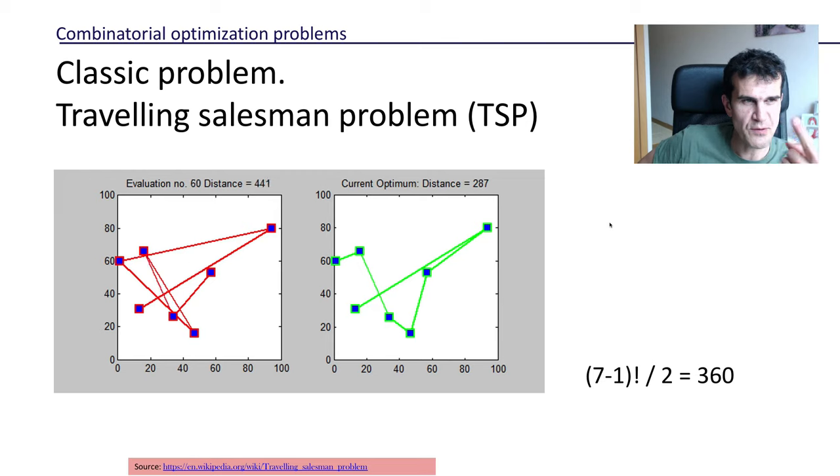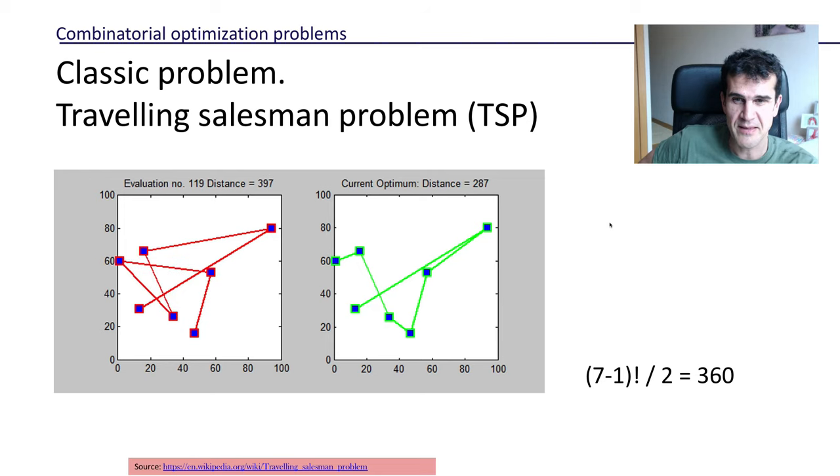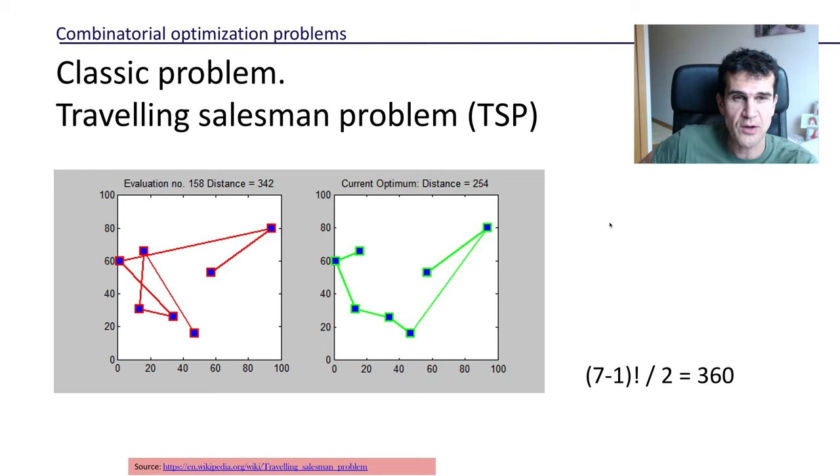If the number of cities or locations we have to go through is not very large, or it's really small I should say, like seven in this example, well in principle you can go through each possible solution and then take the best one, the one that has the shortest possible length.